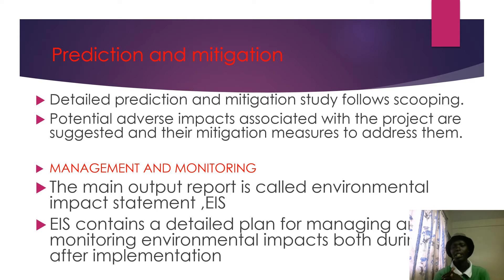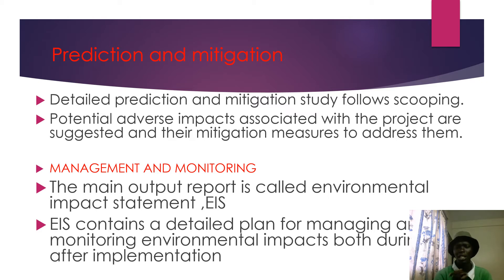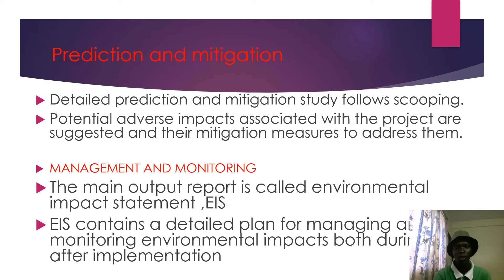The following step is management and monitoring, and the main output report is called the environmental impact statement, or EIS. The EIS is a document containing a detailed plan for managing and monitoring environmental impact both during and after implementation. So it is essentially a plan.